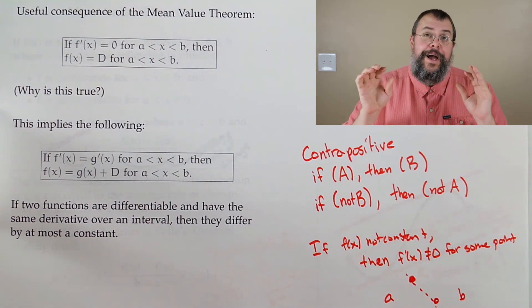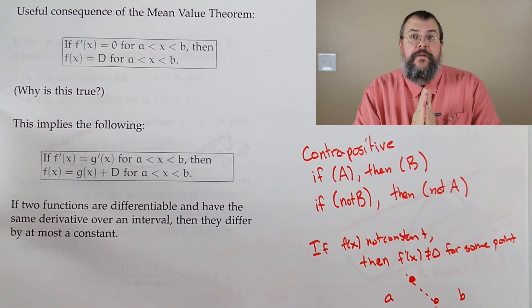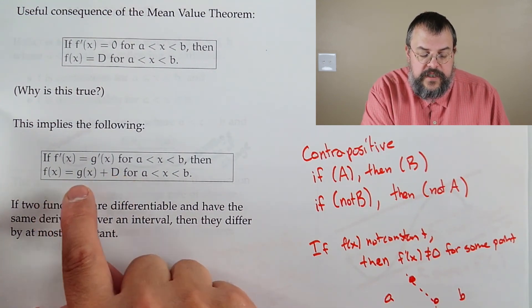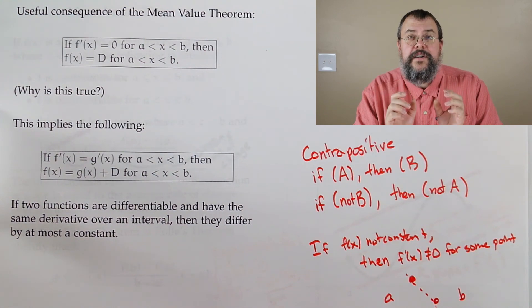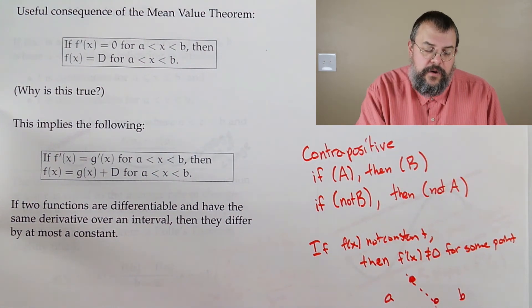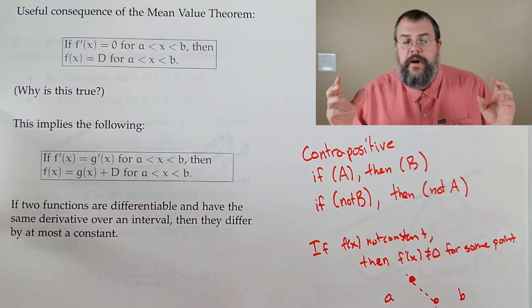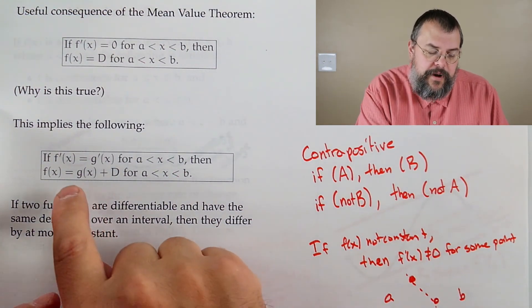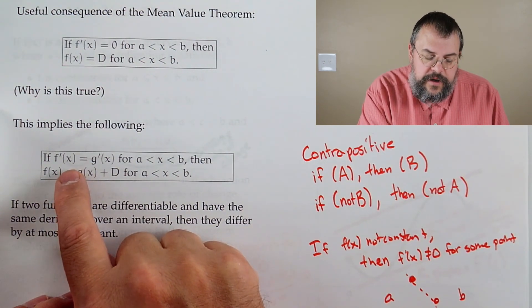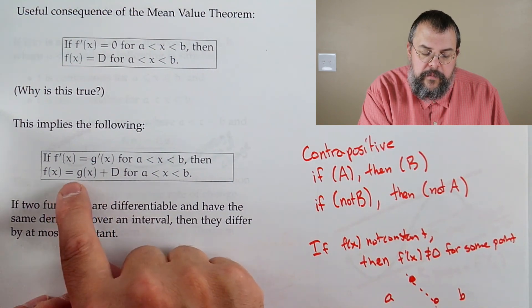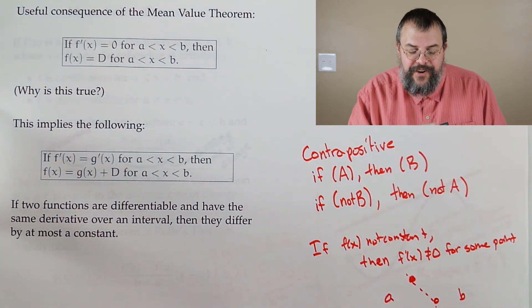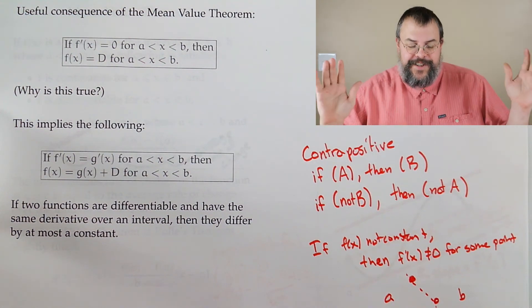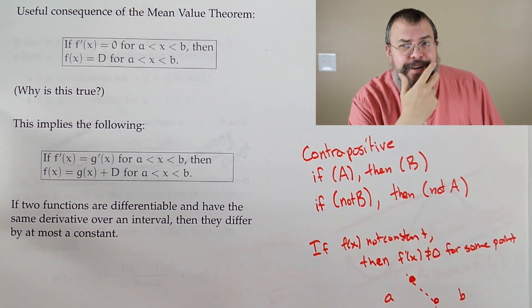How do we use this? If two derivatives are equal, then the functions they came from differ only by a constant. So if you're looking for some function whose derivative equals something — the 'op derivative,' whatever we end up calling it — you might be off by a constant, but that's it. That would be useful to know when we go looking for such things. Stay tuned — we'll get there.